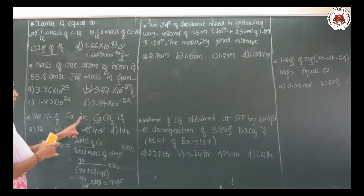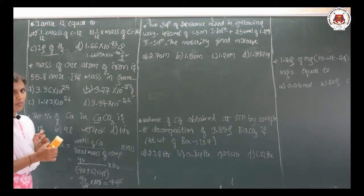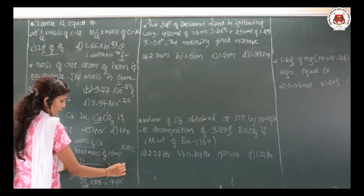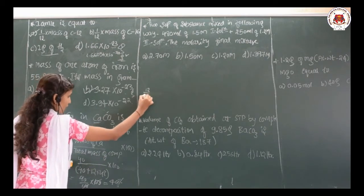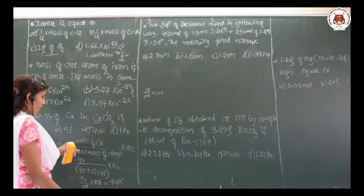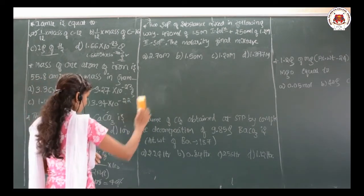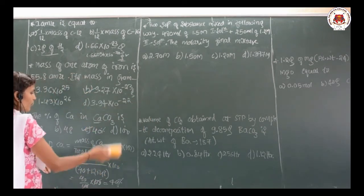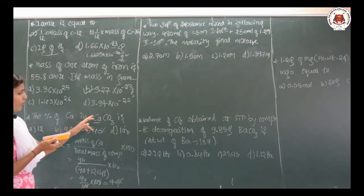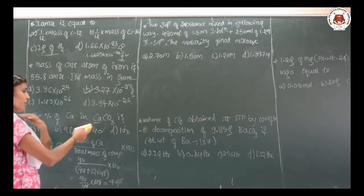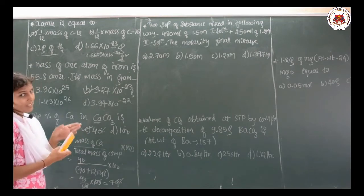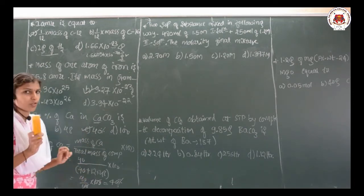So the percentage of calcium in calcium carbonate is 40 percent. Similarly, if they asked for carbon, you take 12 divided by 100 multiplied by 100. Like this, you calculate the percentage of any element: take the atomic mass of that element divided by the total mass of the compound, multiplied by 100. Here the answer is 40 percent.